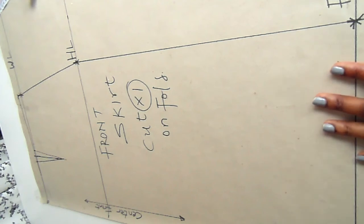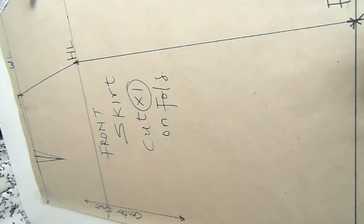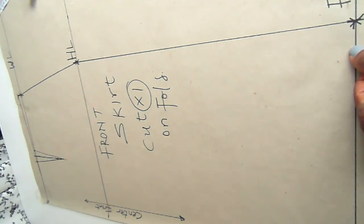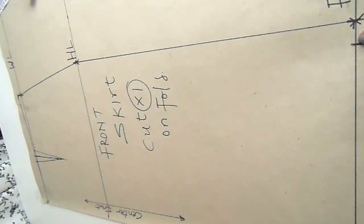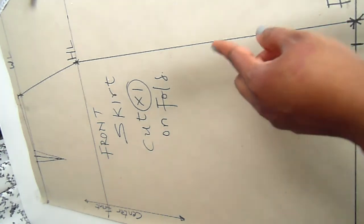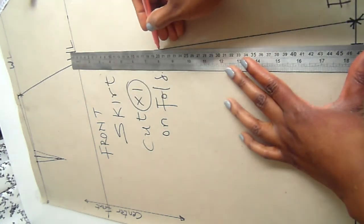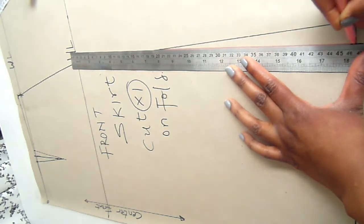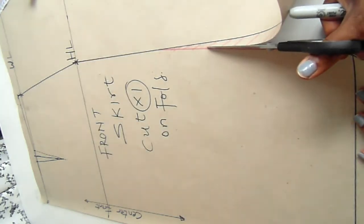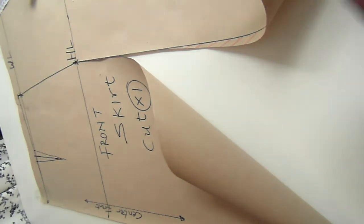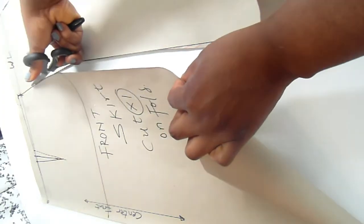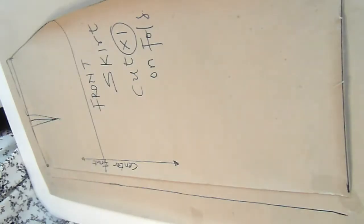Join the points together and you have your final skirt panel for a straight skirt. If you want a pencil skirt, at the hem line take 1 inch at the final length, mark it, and connect that point inward as shown. Use a colored pen to draw that line, then go ahead and cut out the skirt panel.